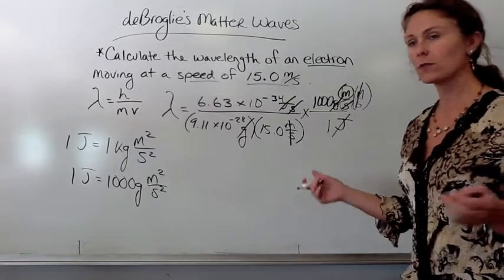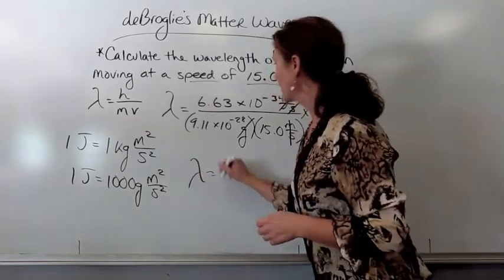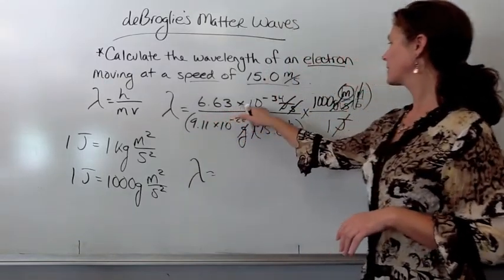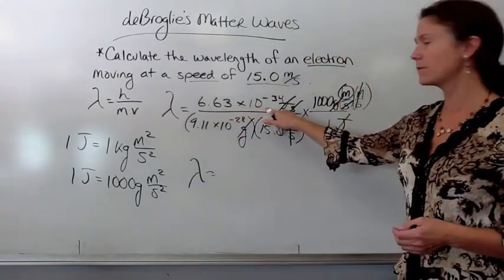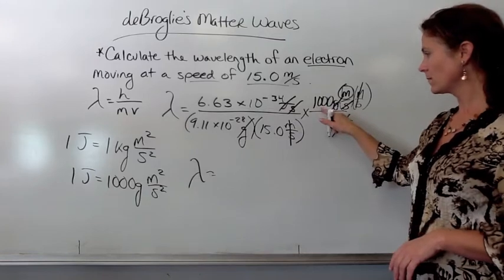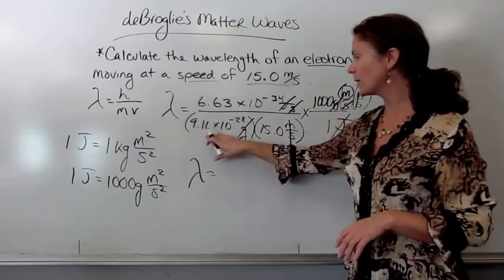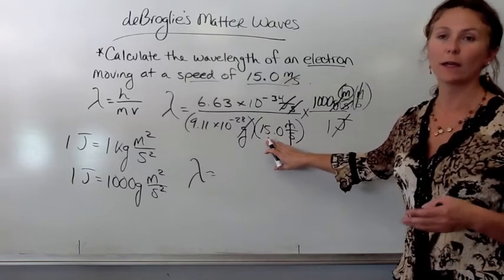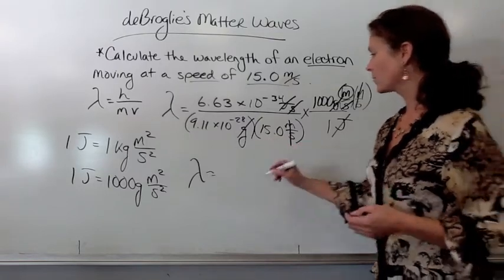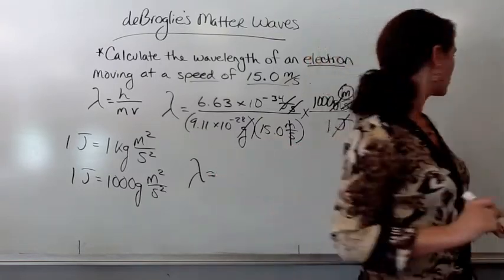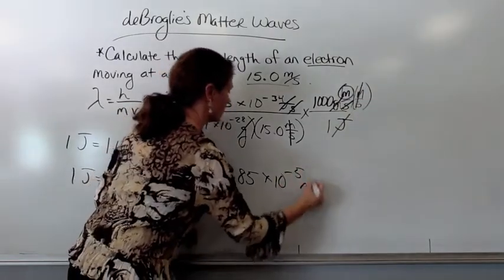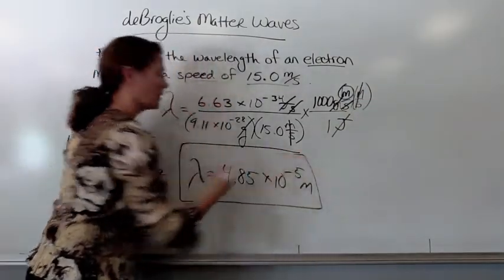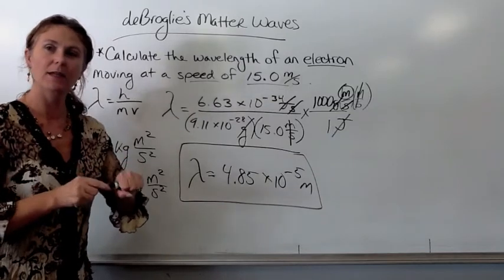And now all I have to do is plug through with your calculator. 6.63 times 10 to the negative 34 times 1,000, divided by 9.11 times 10 to the negative 28, and also divided again by 15. So, we get an answer of 4.85 times 10 to the negative 5th meters.